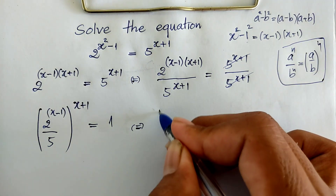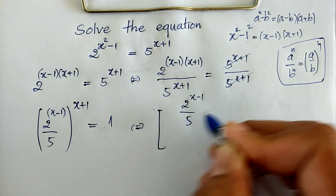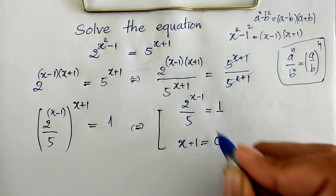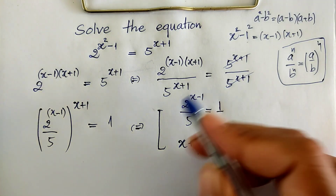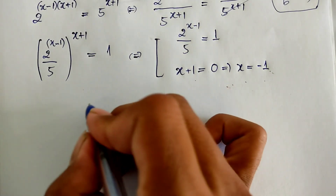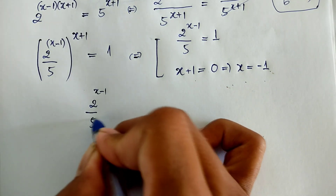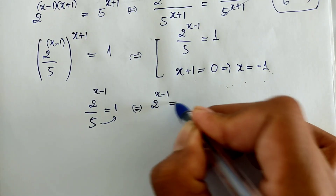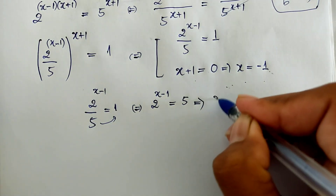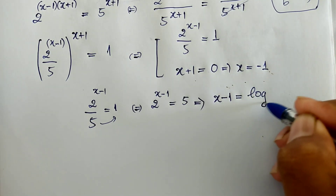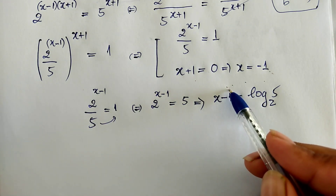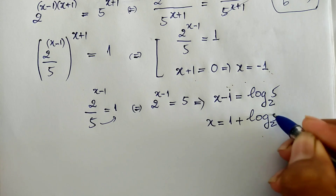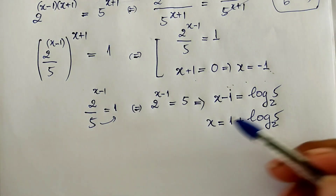We get: 2 power (x minus 1) divided by 5 equals 1, or x plus 1 equals 0. From the second case, x equals negative 1. For the first case, 2 power (x minus 1) divided by 5 equals 1. Moving 5 to the right-hand side, we get x minus 1 equals log base 2 of 5. Then solving for x gives x equals 1 plus log base 2 of 5.